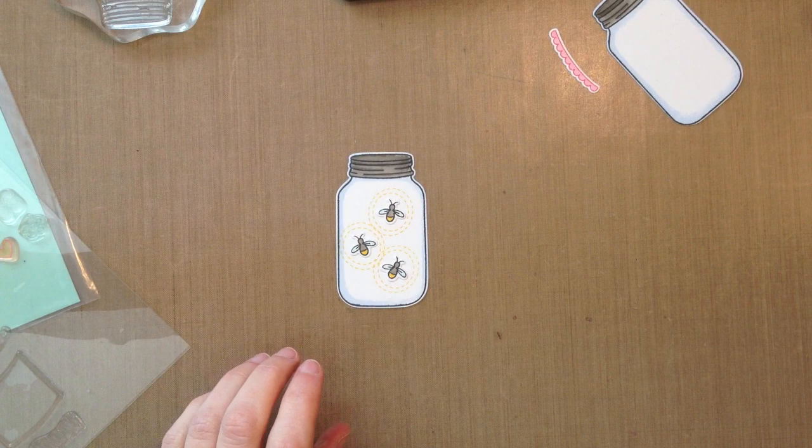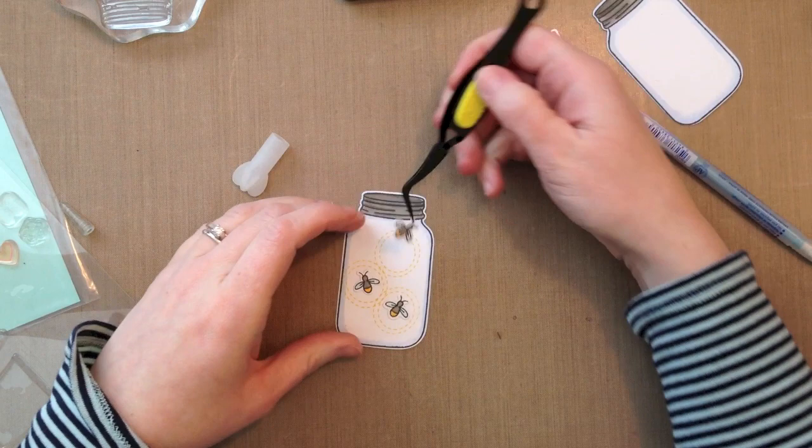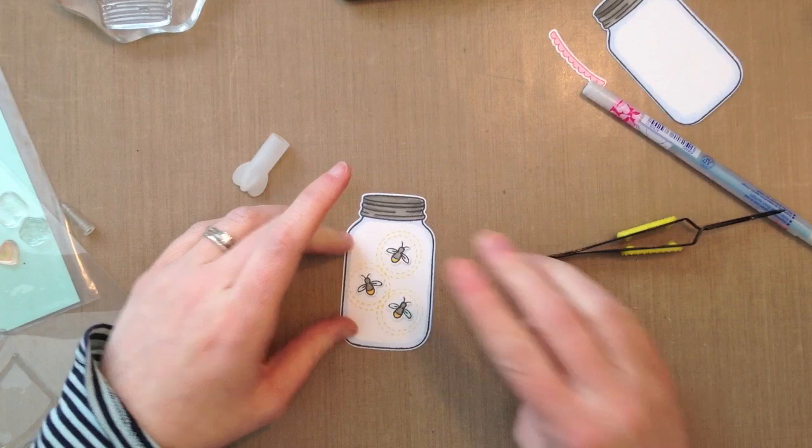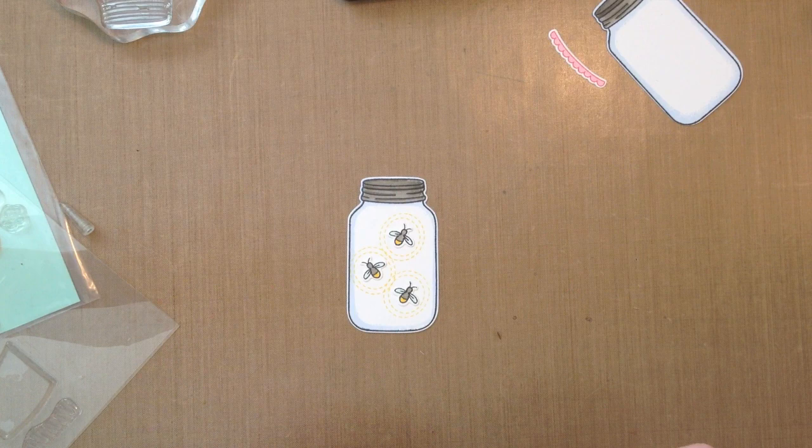And now I'm going to use my tweezers because these are so small and my Quickie glue pen. This is a ballpoint pen that's glue. And I'm just going to add a little bit of glue to the backs of these. You could put a glue dot underneath them if you want to give them a little dimension. Or maybe even a foam dot if you really wanted them to stand out. But I'm just going to glue them down flat. You could also just stamp these in the jar, but I wanted to show you how to use that little die.